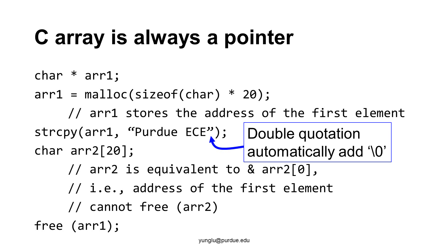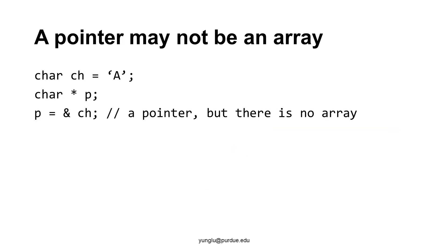In C programs, strings are arrays of characters. Thus, a string is a pointer. A pointer may not be an array. In this example, there is a character called ch and its value is the letter a. p is a pointer to a character. The third line assigns the address of ch to p. There is no array involved, even though p is a pointer. Thus, a pointer may not be an array.